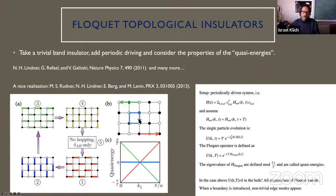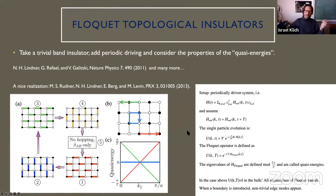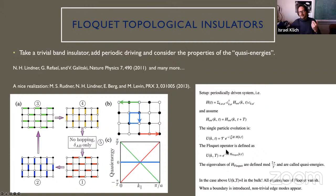There are localized states in the bulk and extended states carrying transport on the boundaries. The analysis of these Floquet systems goes through the evolution operator U. If the system is translationally invariant, you invoke standard techniques: U is diagonal in k, you take the log of U to get an effective Floquet Hamiltonian, and analyze the band structure. What I'm going to show is something similar but where we cannot use this technology because our evolution will be non-unitary.